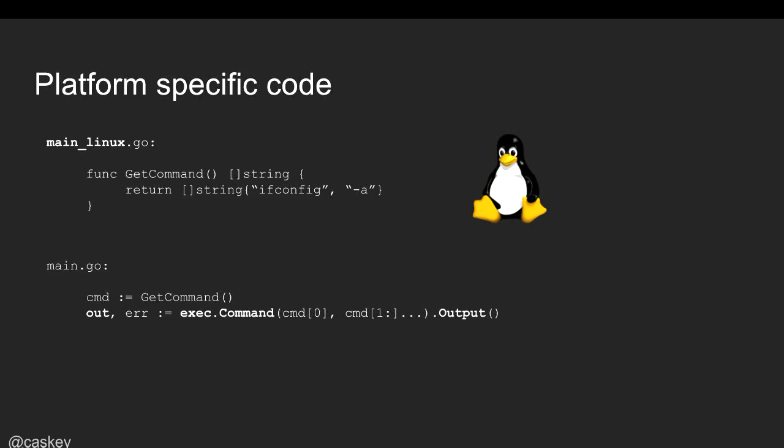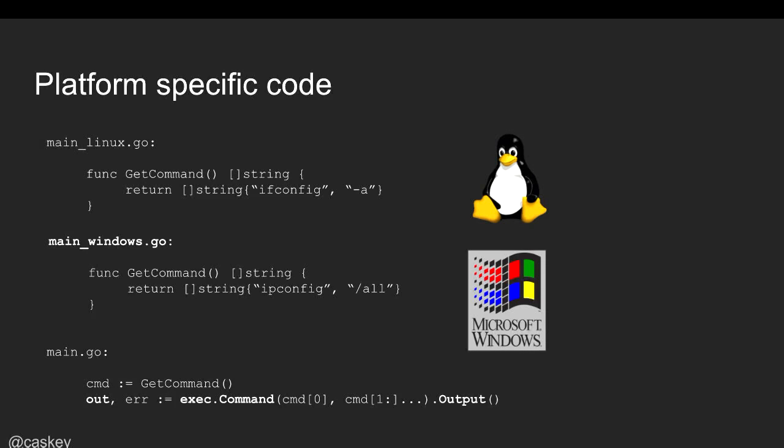Our 'get command' function simply returns an array containing 'ifconfig' and '-a'. We extract that OS-specific element of the command line. Then we take that function out of main.go and put it in a file called 'main_linux.go'. The Go compiler is smart enough that if it sees an underscore followed by something that could be a GOOS value, it will only include that code if you're compiling for that target.